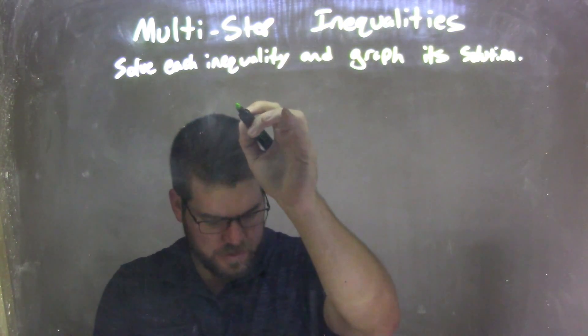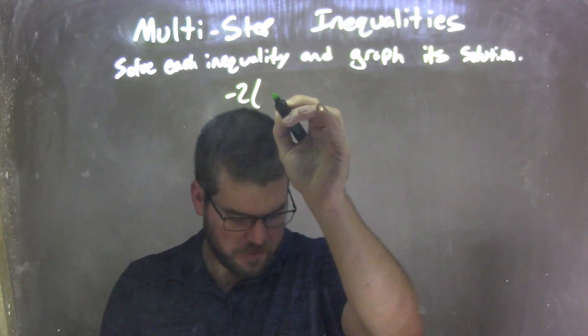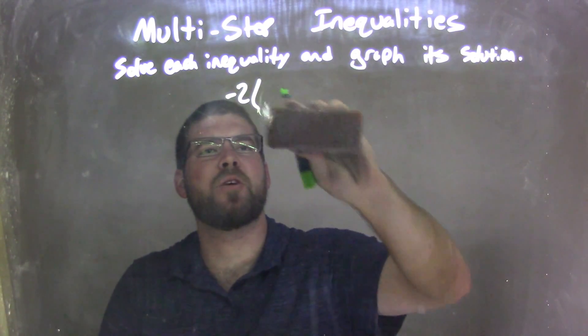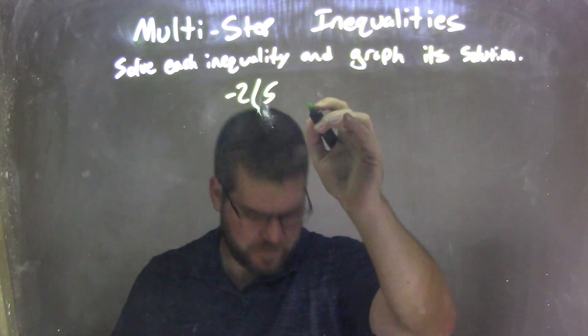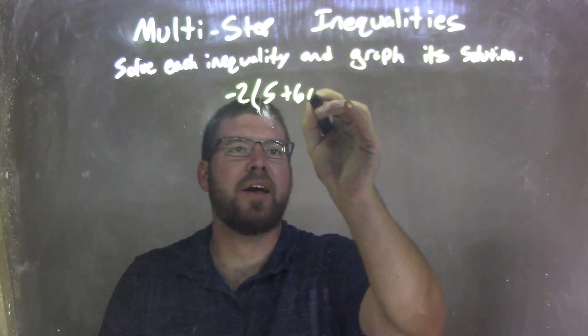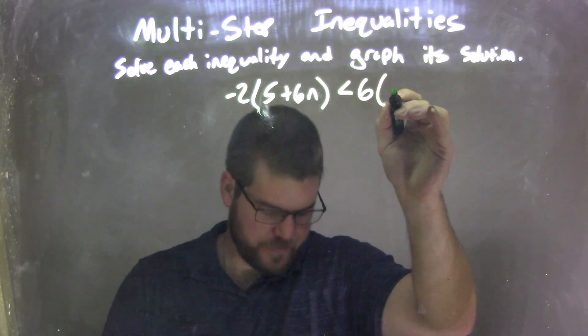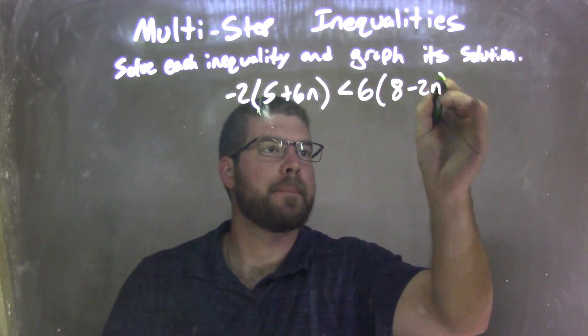We're going to solve each inequality and graph its solution. So if I was given this inequality: negative 2 times the quantity 5 plus 6n is less than 6 times the quantity 8 minus 2n.